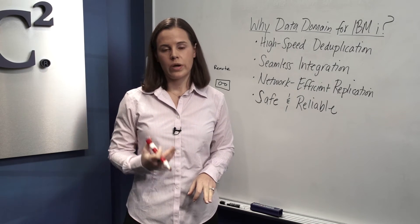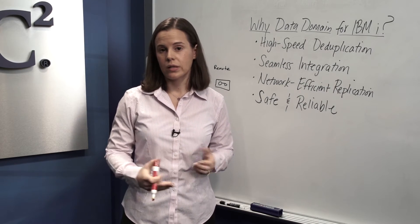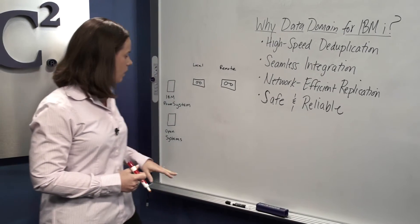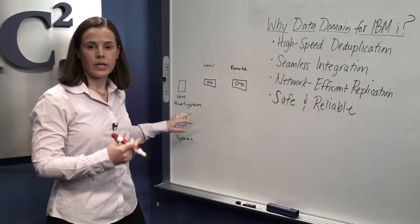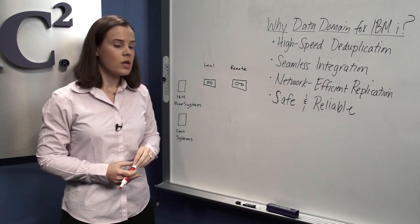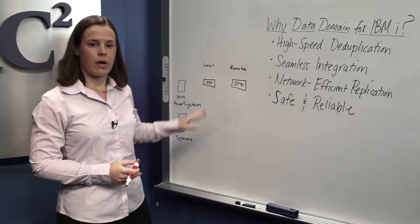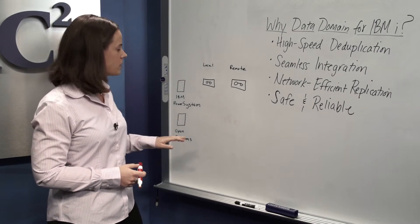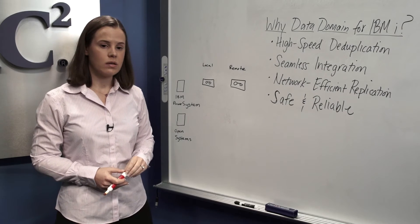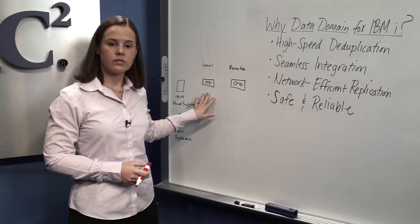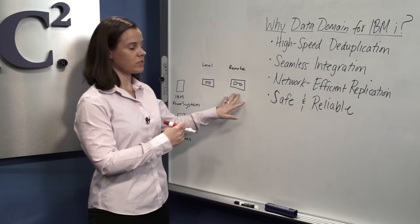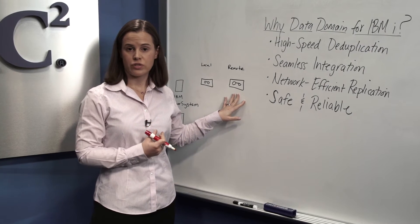First, let's review what your IBM i backup environment likely looks like today. You've got a power system server running an IBM i operating system, which is being backed up by a backup application, making copies of your power system data through the SAN or directly to tape. Then you ship those tapes off-site for disaster recovery.